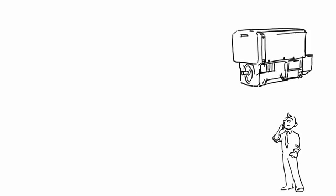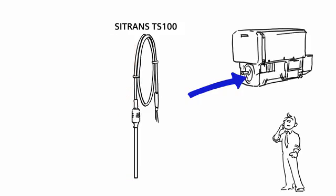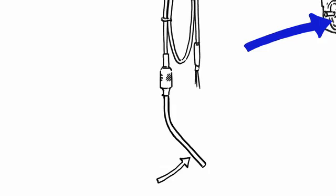For installation in tight spaces, like in machine bearings. With a cable, compression fitting or soldering nipple. Flexible, or with a connector.